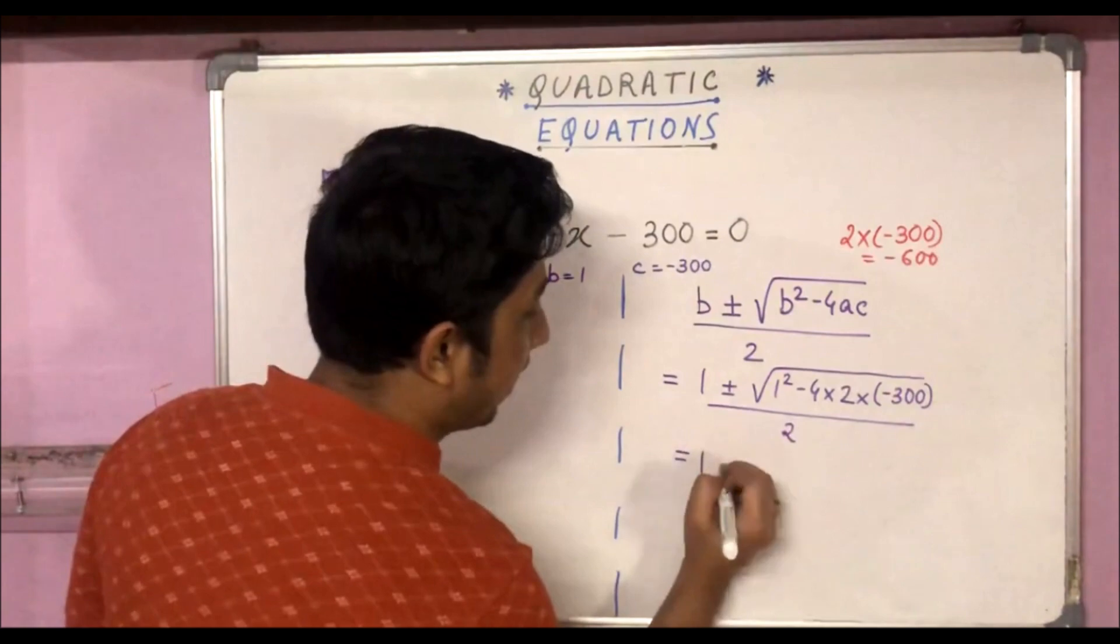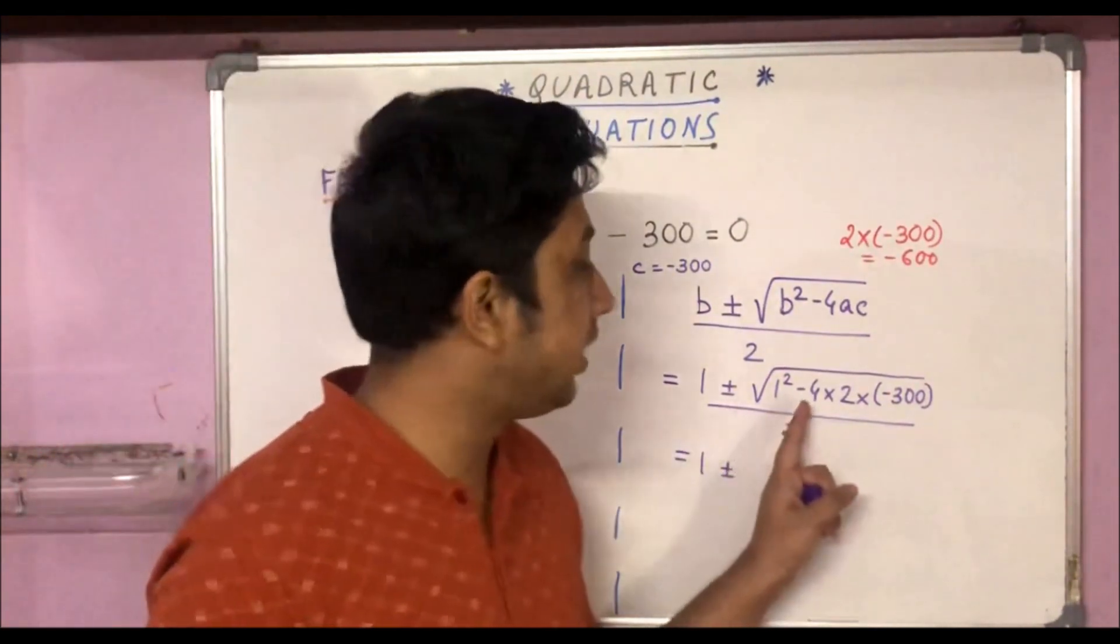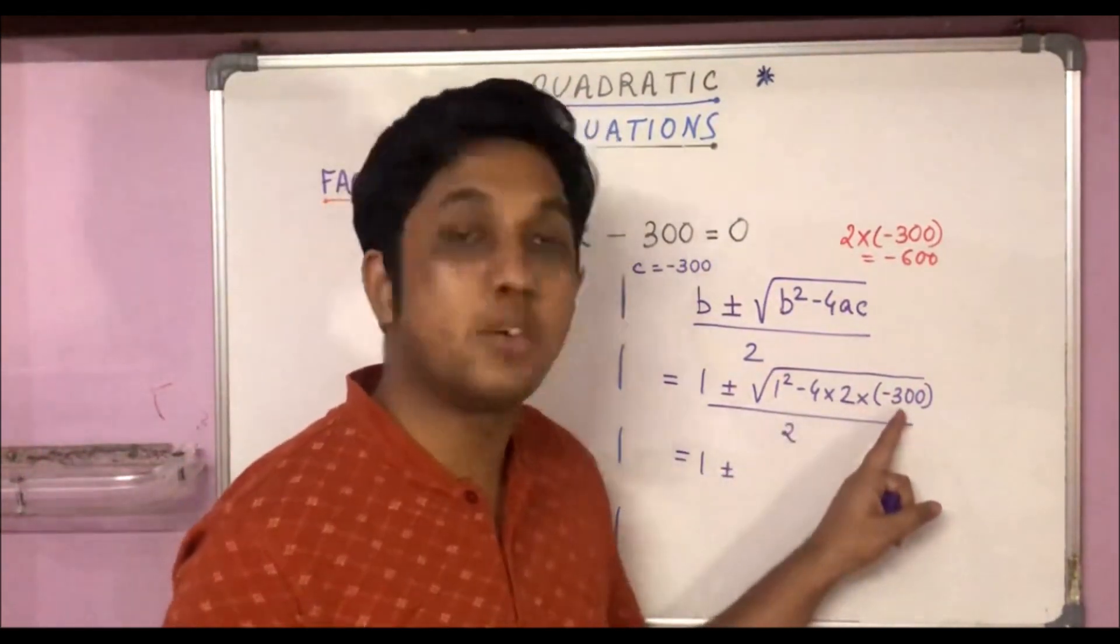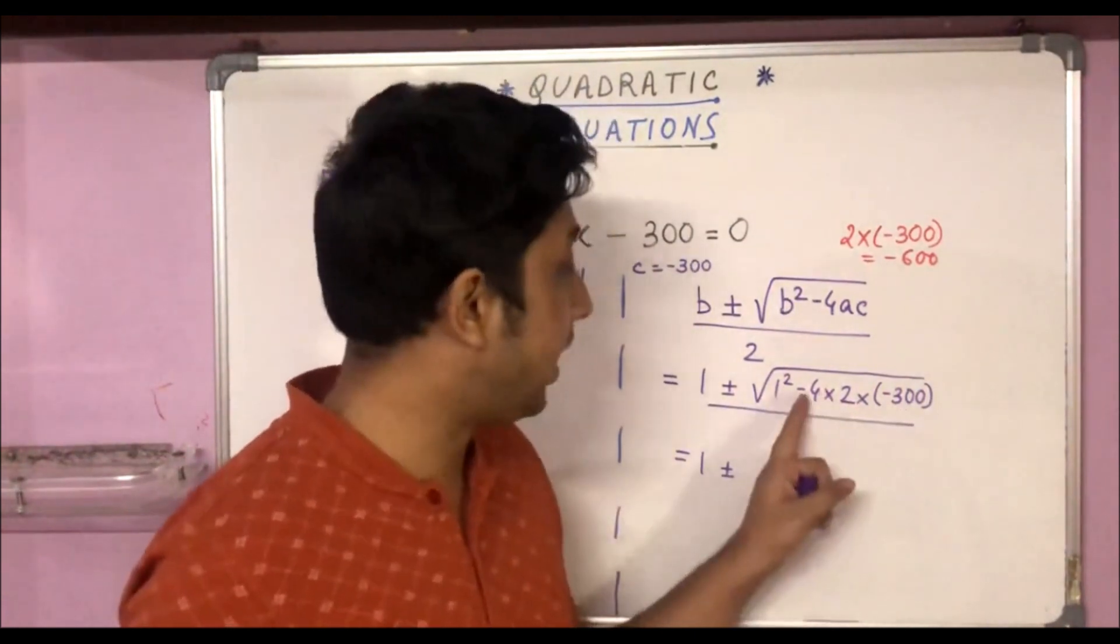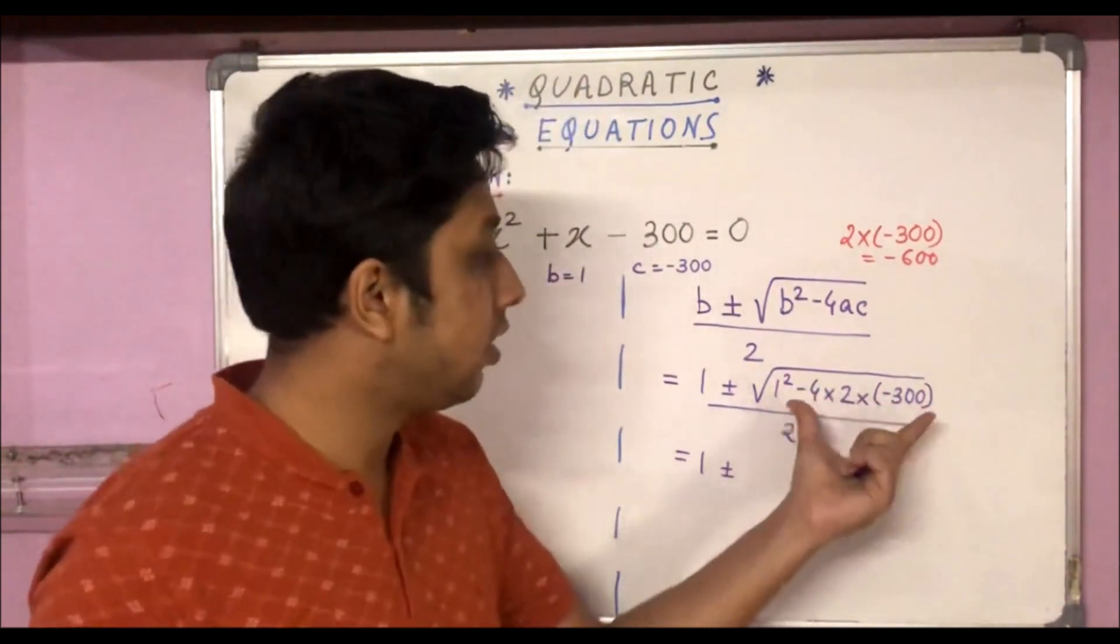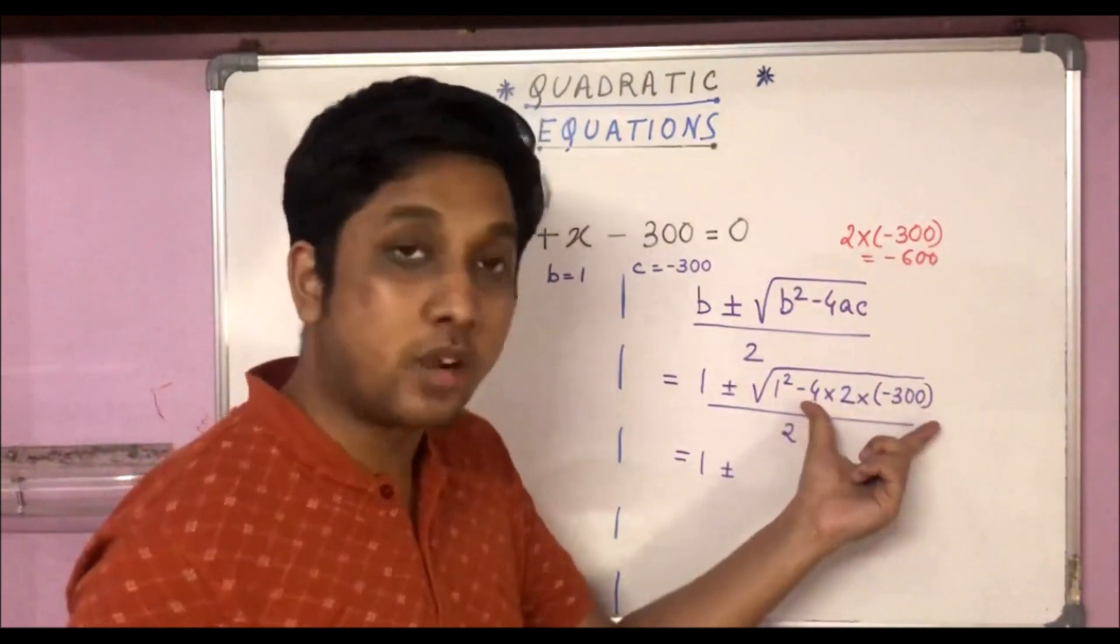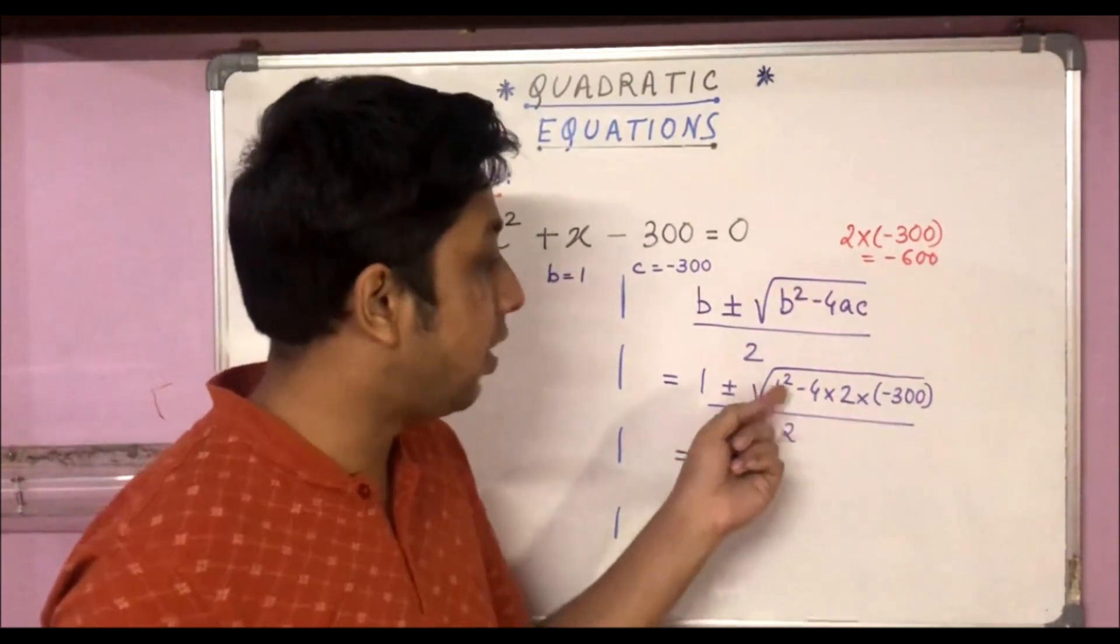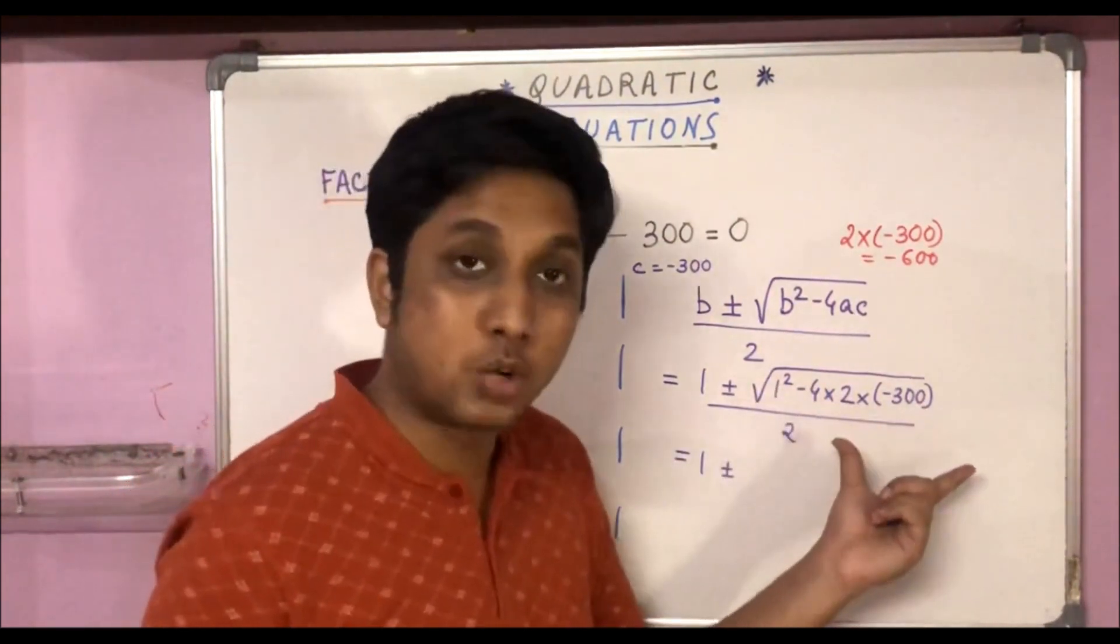So here we will get 1 plus minus - now if we calculate this, 4 × 2 × 300 is 2400, and minus times minus is plus, so this comes out to be plus 2400.